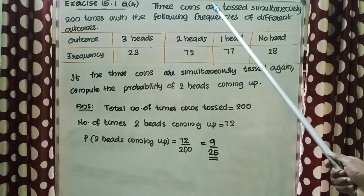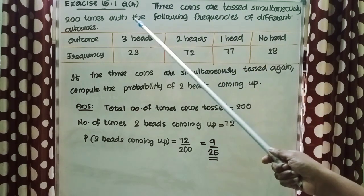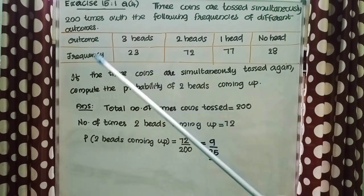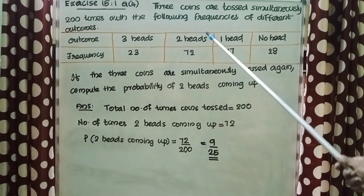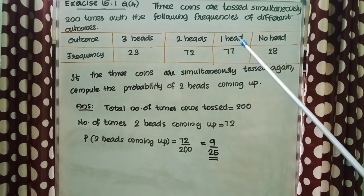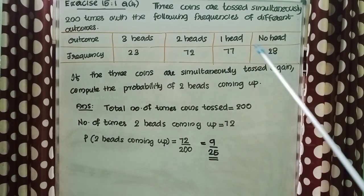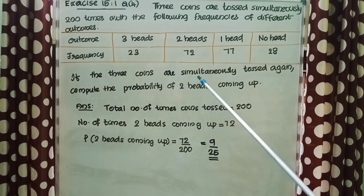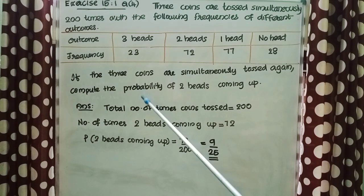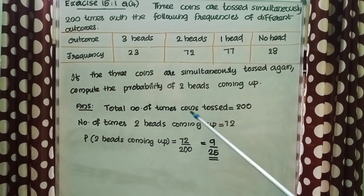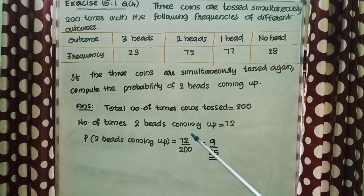3 coins are tossed simultaneously 200 times with the following frequencies: 3 heads — 23; 2 heads — 72; 1 head — 77; no heads — 28. If the 3 coins are tossed again, compute the probability of 2 heads coming up. Total number of times coins tossed = 200. Number of times 2 heads came up = 72. Probability = 72/200 = 9/25.